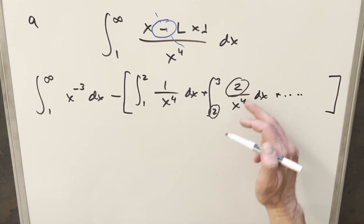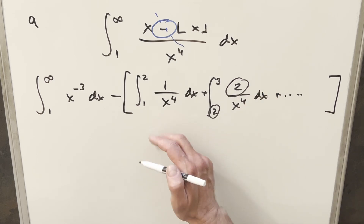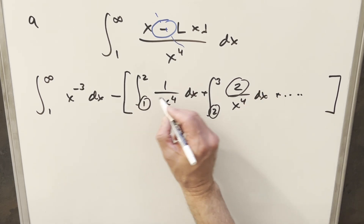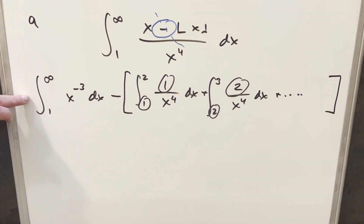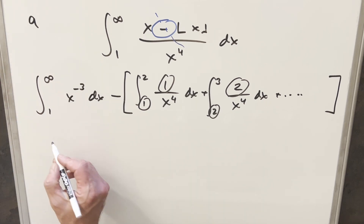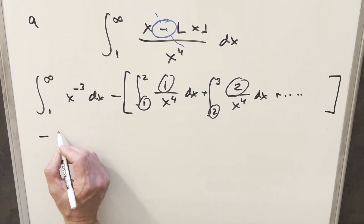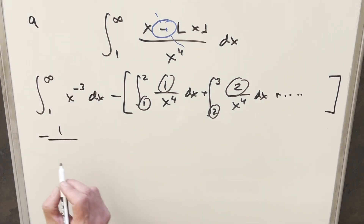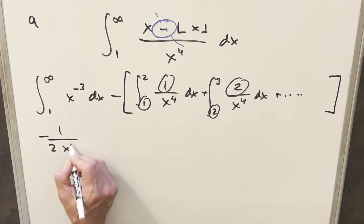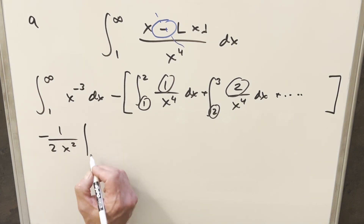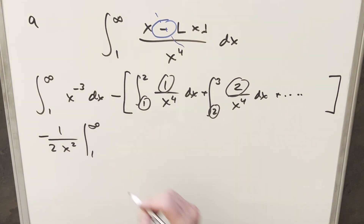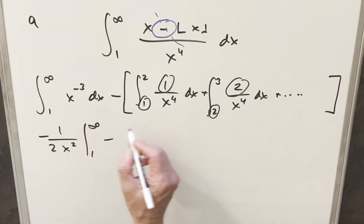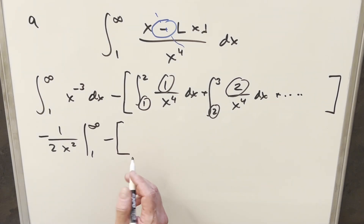We're going to have to go all the way to infinity with this. In each of these integrals, the value in the numerator is going to be the same as the lower bound. For the first integral, we can just integrate with the power rule. This becomes minus one over two x squared, evaluated from one to infinity. For the next part, since all these integrals are going to be kind of the same, we can generalize them.